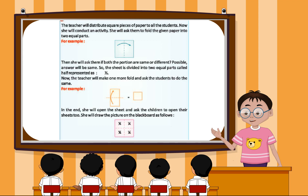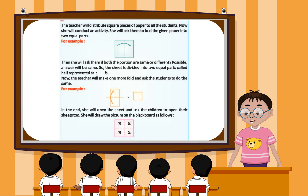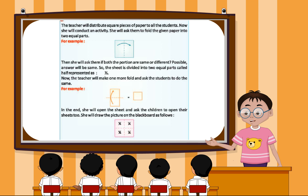For example, she will ask them if both the portions are the same or different. The possible answer will be same. So the sheet is divided into two equal parts, called half, represented as 1 by 2.